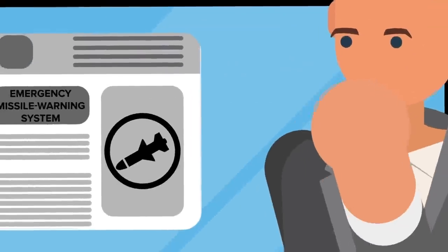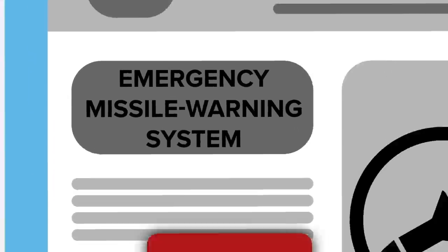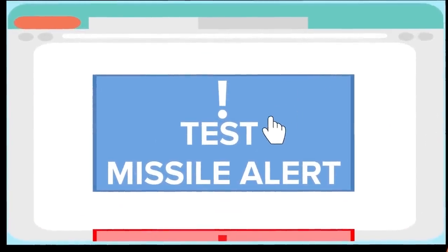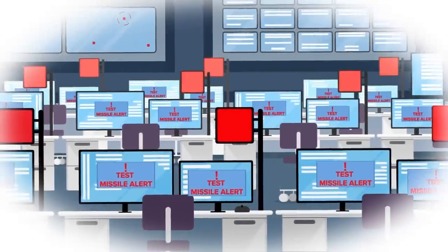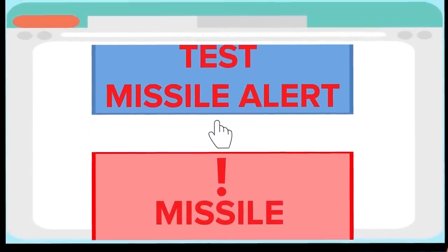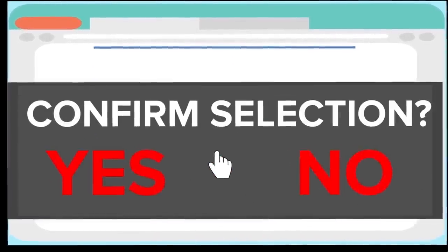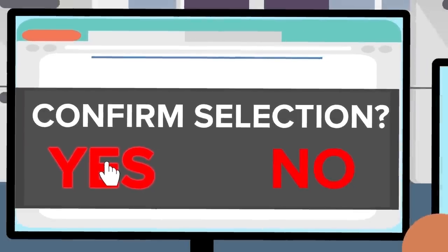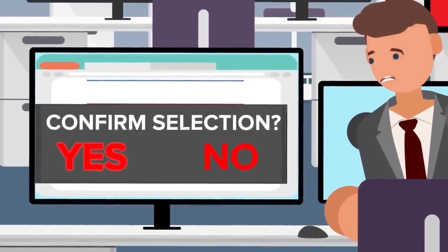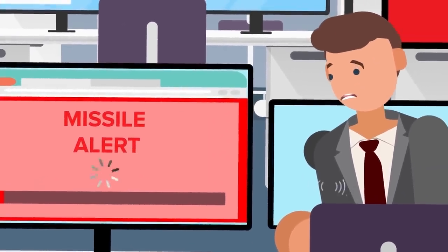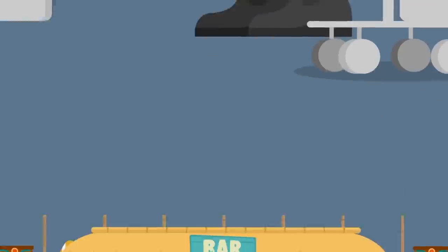Fred initiates the testing in the emergency missile warning system. The prompt on the screen gives him two options. The first, Test Missile Alert. This is the option he has chosen every day of his career. Today, however, Fred is distracted. Instead of selecting the Test Missile Alert option, which sends a message internally to the agency to ensure everything is working properly, Fred selects the choice below it: Missile Alert. The computer then prompts Fred, asking him to confirm his choice. Before he realizes his mistake, Fred clicks yes. The moment his finger rises from the mouse, his stomach begins to sink. It's at this point Fred realizes he has made a terrible mistake. He stares at the screen in disbelief as his cell phone begins to buzz inside his pocket.